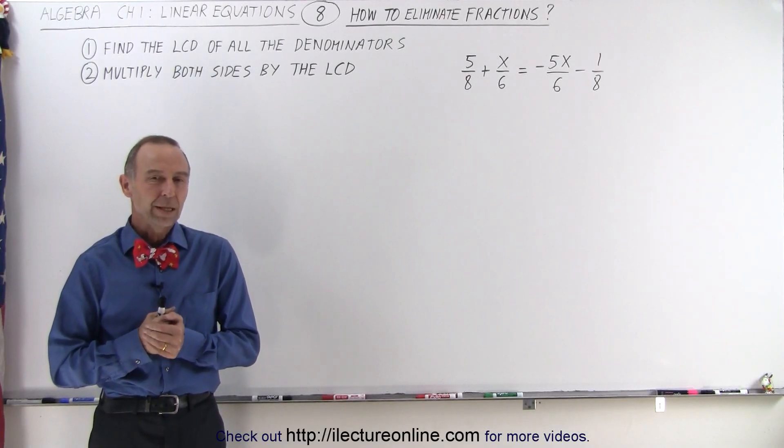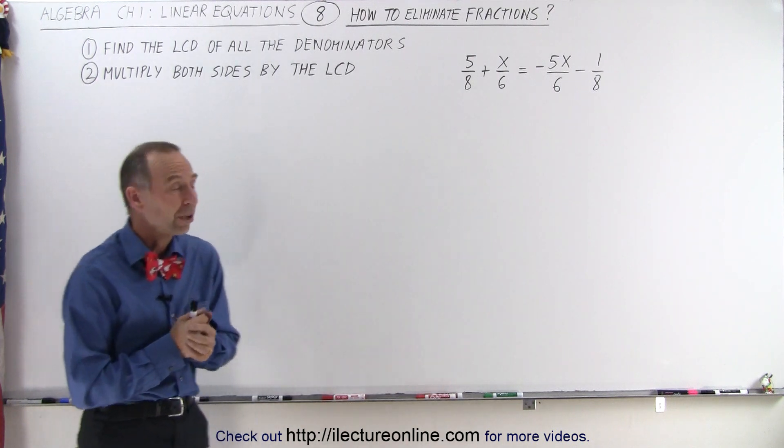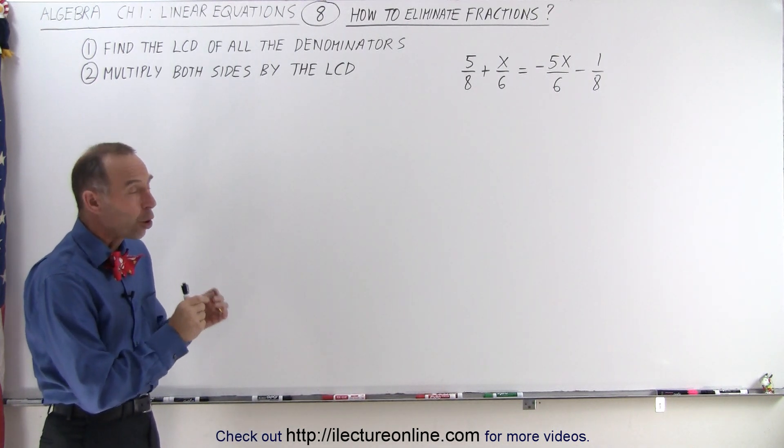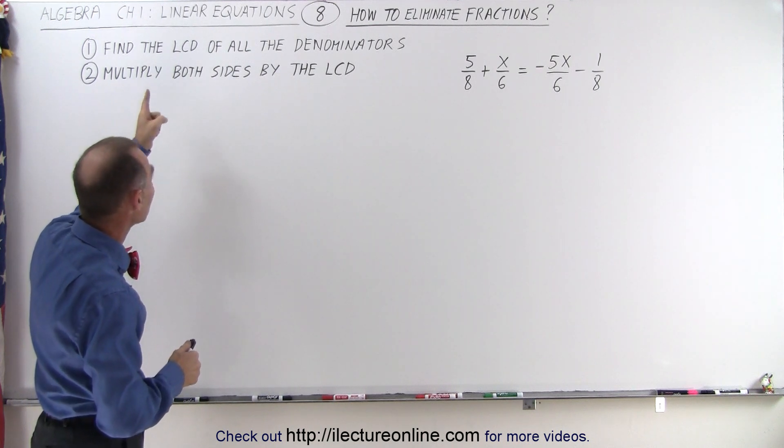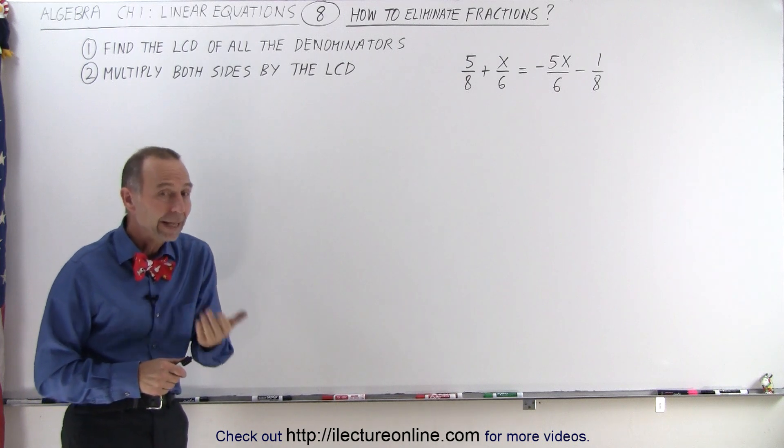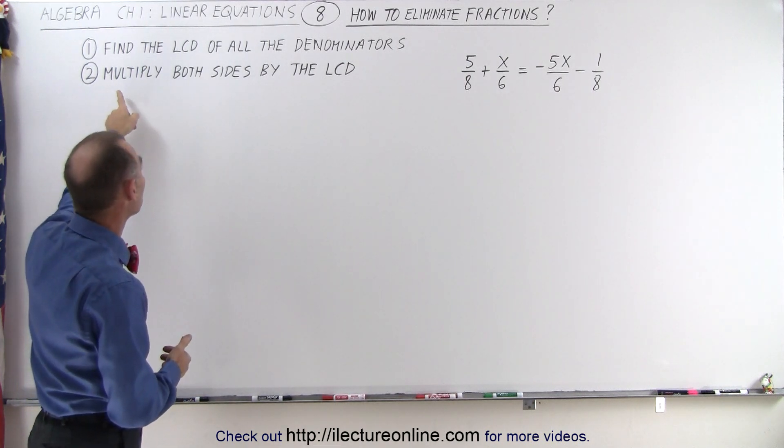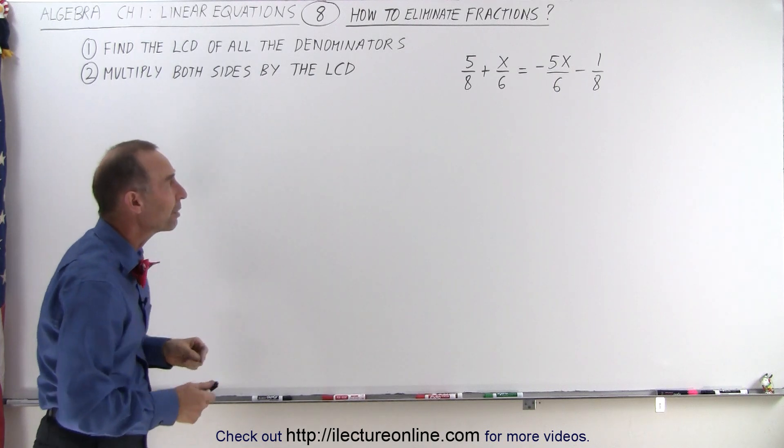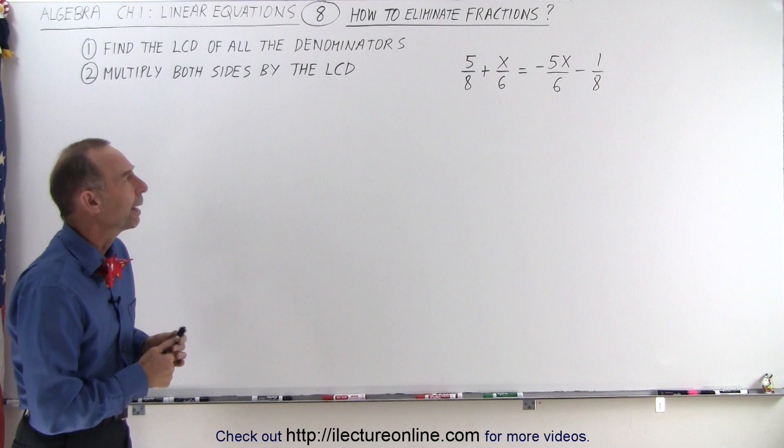Welcome to our lecture online. The process of eliminating fractions from a linear equation in algebra is to take a look at all the denominators. First, we're going to find the lowest common denominator of all the denominators. Next, once we've found the lowest common denominator, we're going to multiply both sides of the equation by that lowest common denominator.